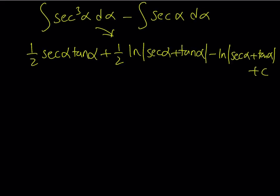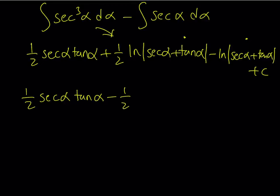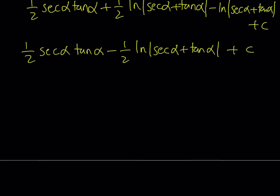Now these two terms are like terms, so we can simplify them. One half times something minus one times the same thing gives us negative one half times that thing, which is ln of the absolute value of secant alpha plus tangent alpha, plus C. That is the result of the integral, but we have to turn it back into the original variable.